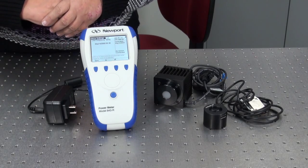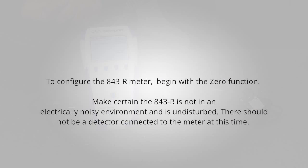To configure the 843-R meter, begin with the zero function. Make certain the 843-R is not in an electrically noisy environment and is undisturbed. There should not be a detector connected to the meter at this time.